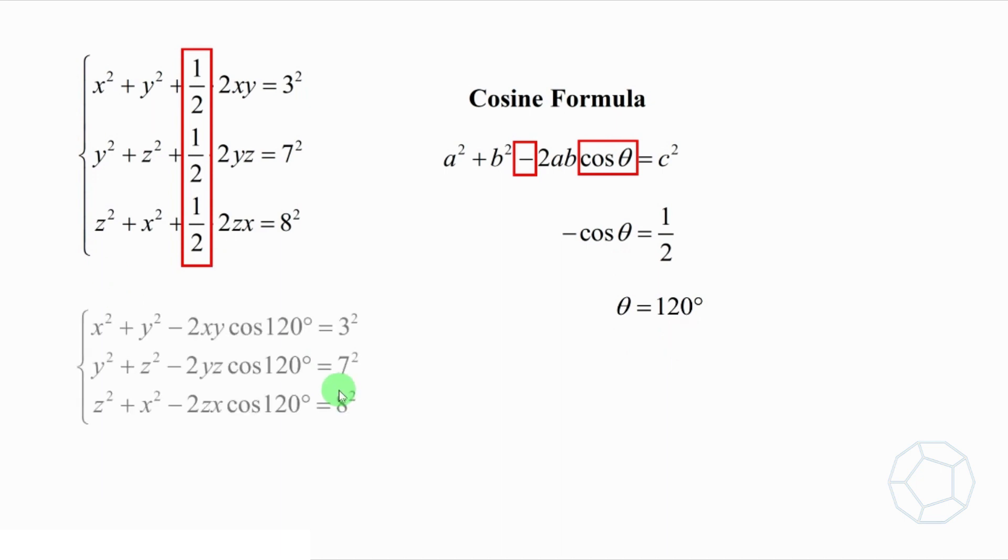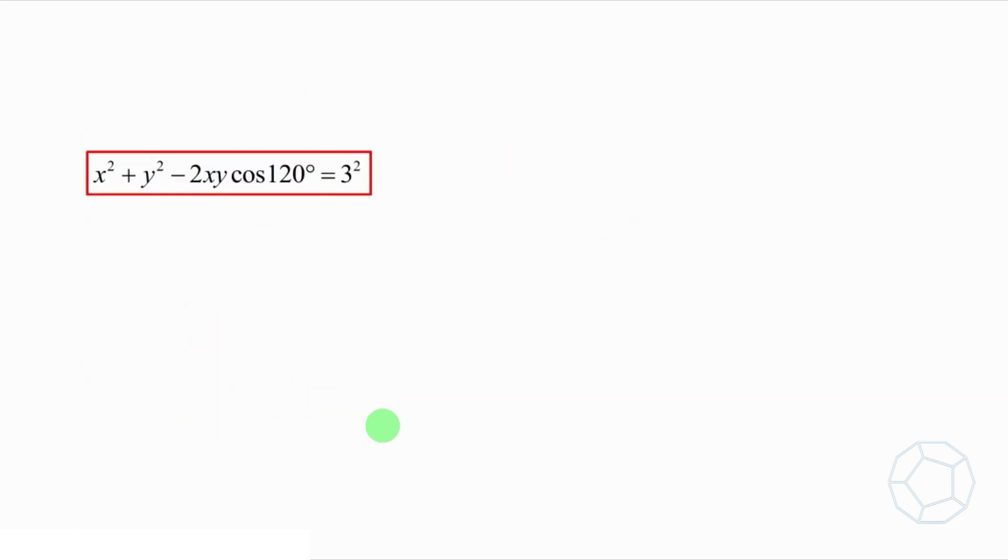Let's rewrite the equations like this. In other words, we can draw 3 triangles based on these equations. Let's see how to work it out. From the first equation, x square plus y square minus 2xy cosine 120 degrees equals to 3 square, we draw the side Pa with length x, the side Pb with length y, and the angle between them is 120 degrees. So the length of the opposite side is equal to 3.